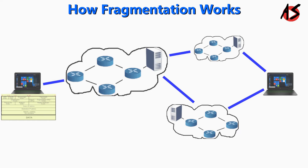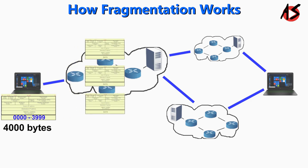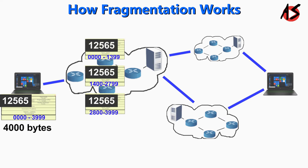For example, if we want to send 4000 bytes (0 to 3999) to the network, and due to a smaller MTU it divides the original datagram into smaller fragments with bytes 0 to 1399, 1400 to 2799, and 2800 to 3999. Here, 12565 is the identification number that will be copied into each fragment.